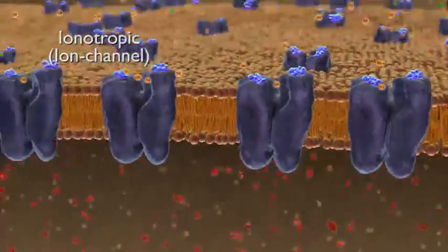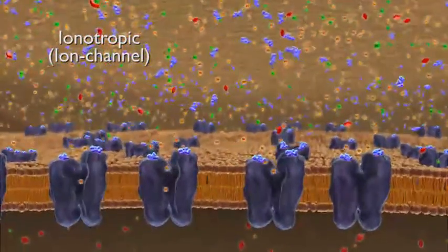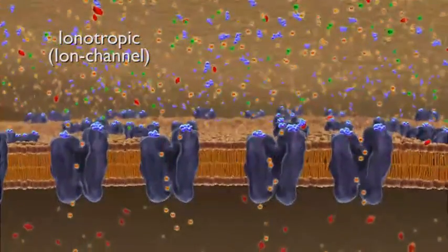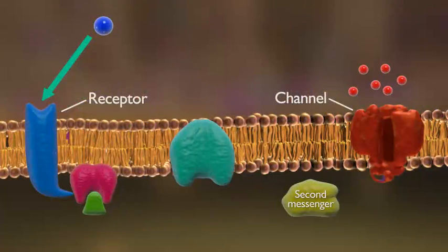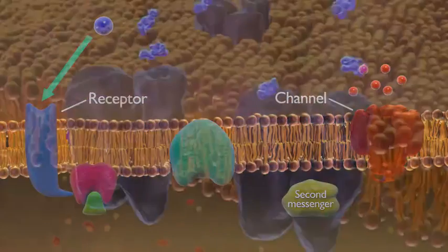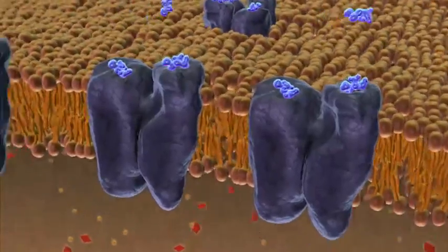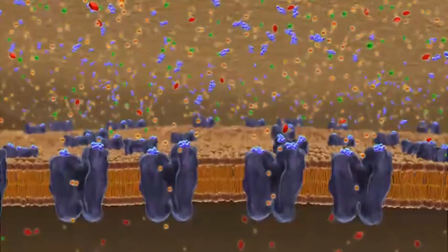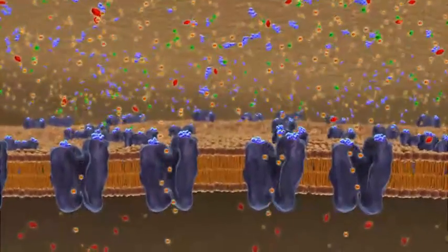There are two different types of receptors on a postsynaptic membrane: ionotropic, or ion-channel receptors, and metabotropic, or G-protein-coupled receptors. When a neurotransmitter binds to an ionotropic receptor, the transmitter-receptor complex generates rapid and brief changes in postsynaptic neuronal excitability.